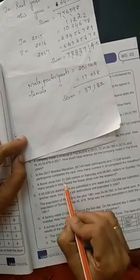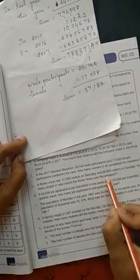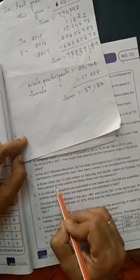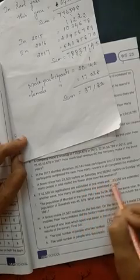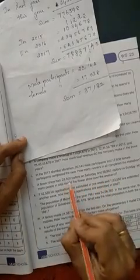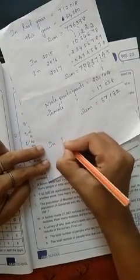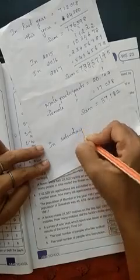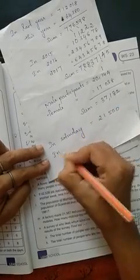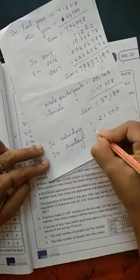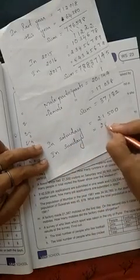Question number J. A flower show had 21,500 visitors on Saturday and 28,965 visitors on Sunday. How many people in total visited the flower show over the weekend? We want to find out the total of these two numbers. On Saturday, 21,500 visitors. On Sunday, 28,965 visitors.